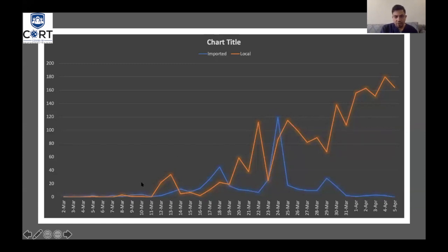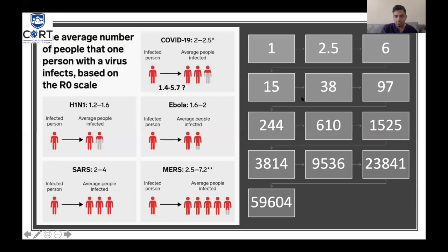This chart shows that local community-transmitted cases — what is called al-Mukhalatine — are going up throughout March and April. Imported cases, shown in blue, were initially the highest number, but as time passed we started to have more community transmission. We saw a peak recently, but we need more days and more data to assess whether that is actually our peak.